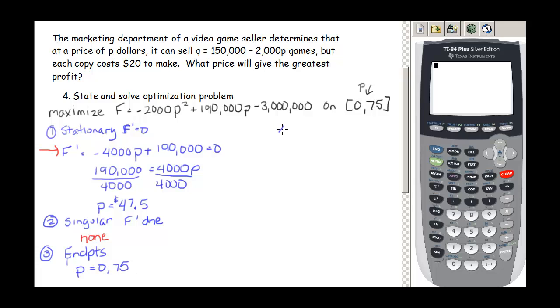Then once we get that, we find those values. We build a table, so we have 0, we have 47.50, and we have 75. And let's build the table using our calculator. So the first thing I'm going to do is I'm going to put my function in my Y1. So here I have my function in my Y1. Let's go ahead and look at the table. So second graph, clear out these previous values, and plug in the values that I want to look at.